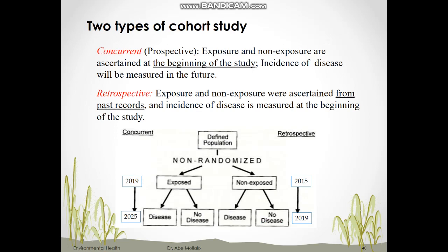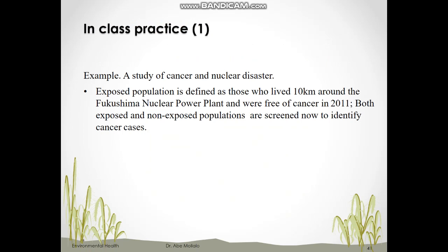For example, in a cancer and nuclear disaster study, the exposed population is defined as those who lived within 10 kilometers of a nuclear power plant and were free of cancer in 2011. Both exposed and non-exposed populations are screened now to identify cancer cases. This is a retrospective cohort study because there is a follow-up and the exposure is compared after almost 10 years.